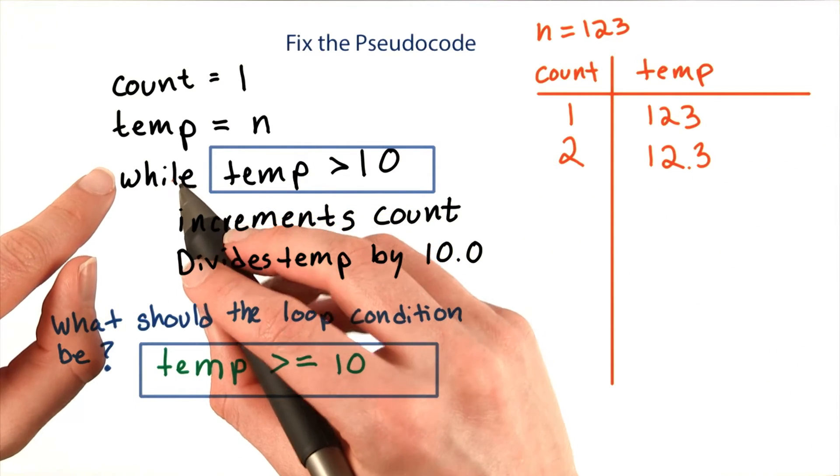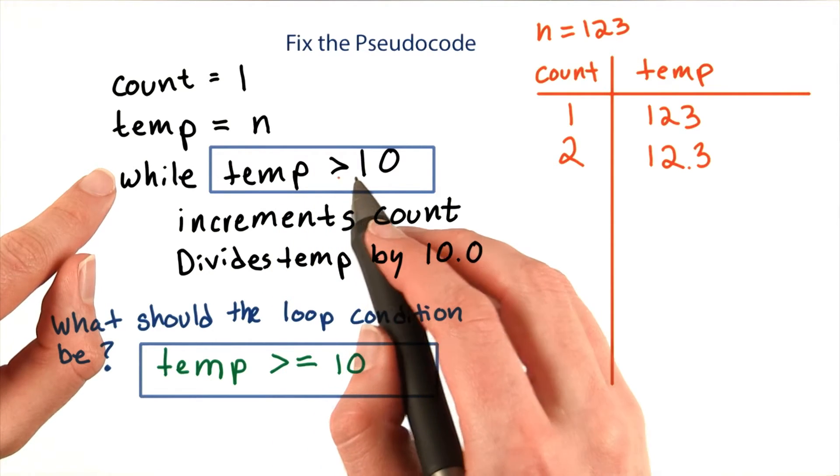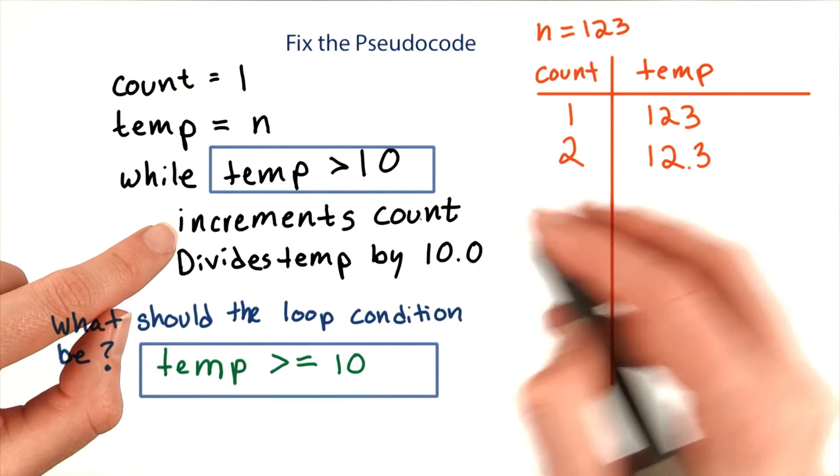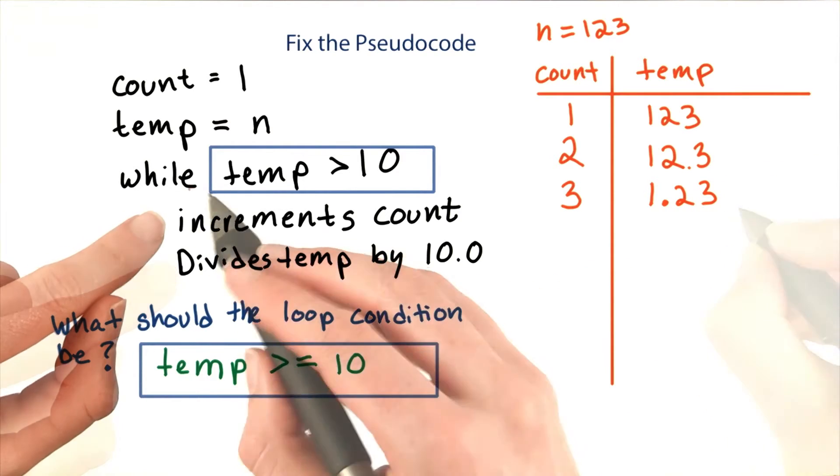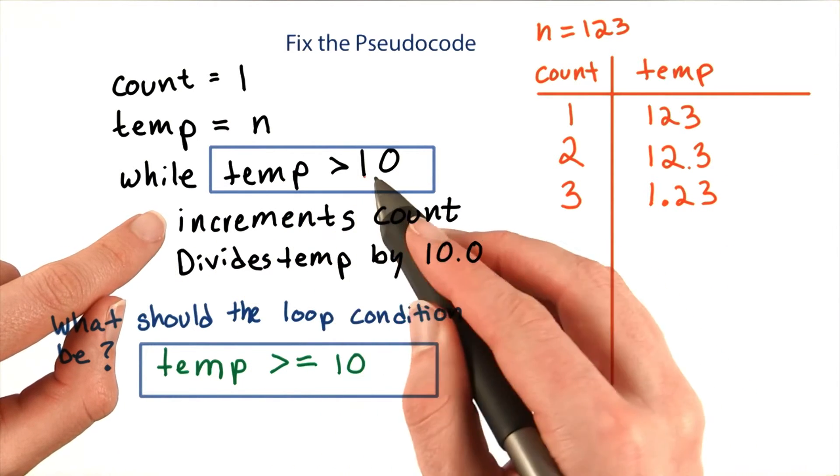Now we go back to the loop condition. Temp is still greater than 10, so we increment the count and then divide temp by 10.0 again, so we have 1.23. Now when we check again, temp is less than 10, so we skip to the end and we're done.